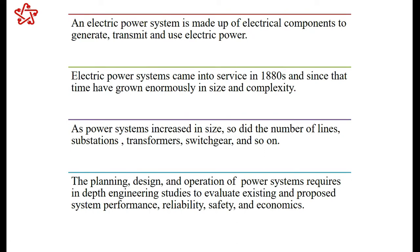An electric power system is made up of electrical components, mainly three: generation, transmission, and distribution for utility purposes. The electrical power system came into existence way back in the 1880s and since that time has grown enormously in size and complexity. As population increases, the comfort level rises, and the need for electricity keeps increasing. As demand increases, generation increases, and the connecting network of transmission and distribution also increases, making the power system more complex.